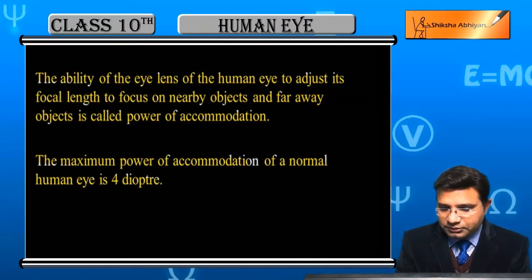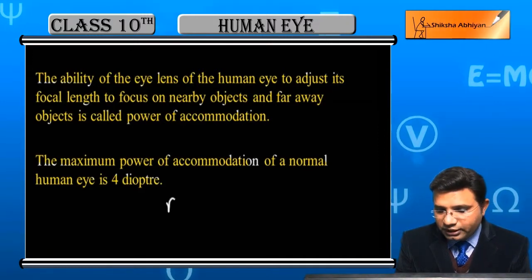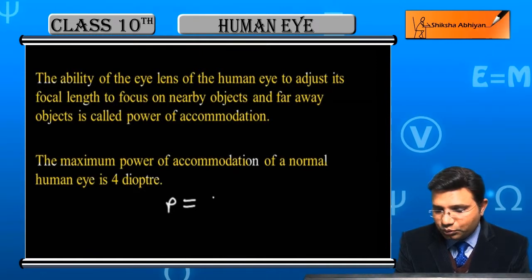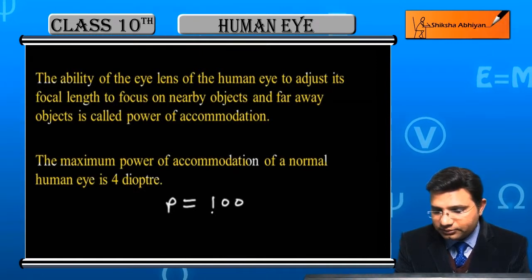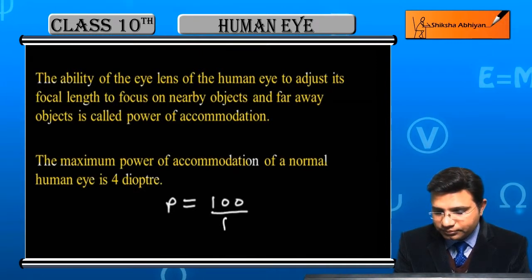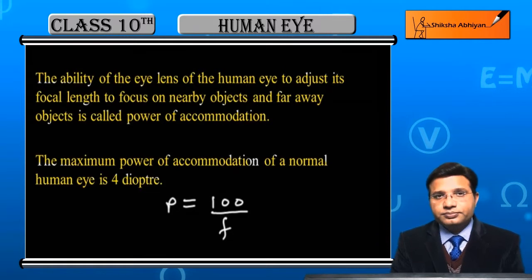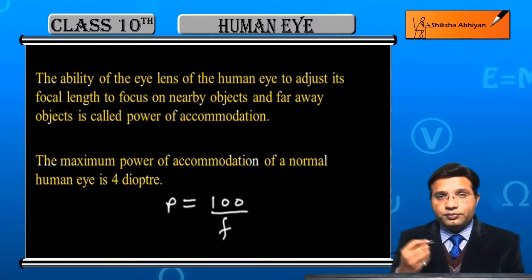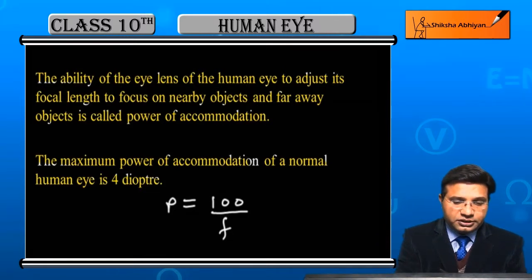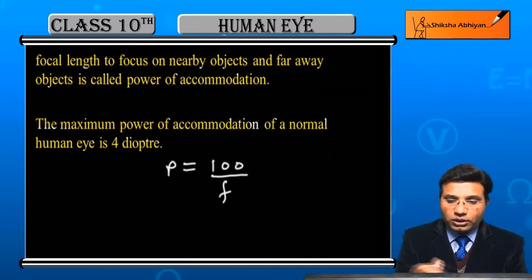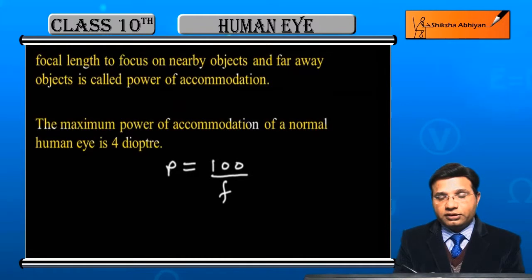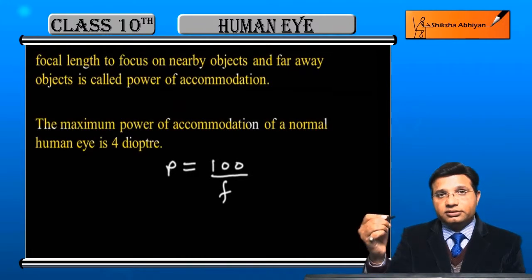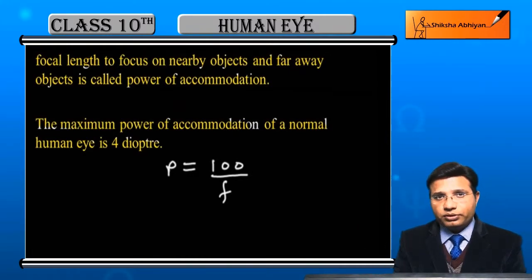हमें पता है, power क्या होता है — power is reciprocal of focal length। और अगर हम focal length cm में measure कर रहे हैं, तो 100 upon F करना पड़ेगा, otherwise 1 upon F भी कर सकते हैं।